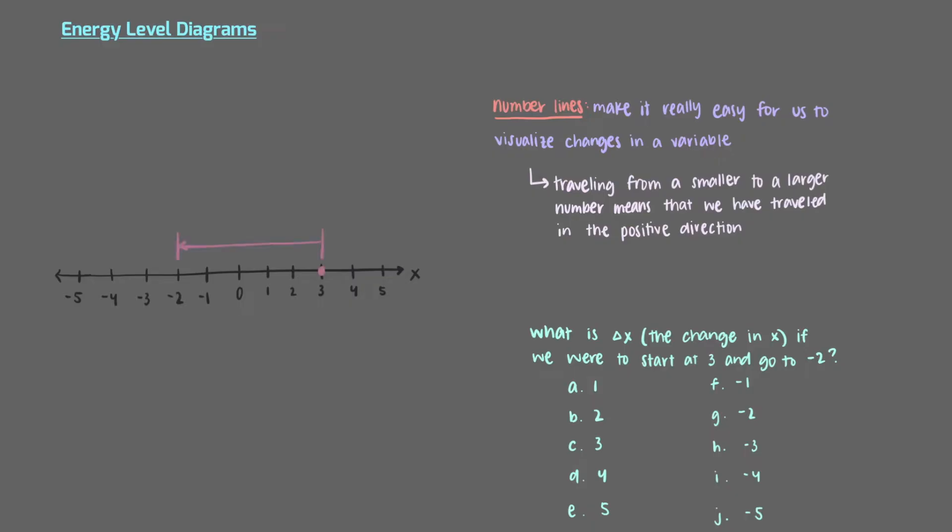To get from 3 to minus 2, we traveled 5 units. Notice that this time, however, we went in the opposite direction. Because we started with a big number and traveled to a smaller number, we traveled in the negative direction. This means that the change in x in this case is negative 5.